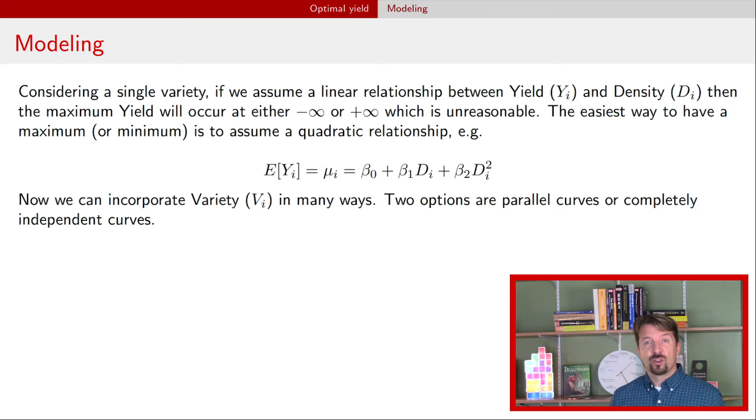If we want a parallel curves model we're going to include variety. And if we want a model that has completely independent curves for every level of variety then we're going to include an interaction between variety and the linear density and variety and that quadratic density.